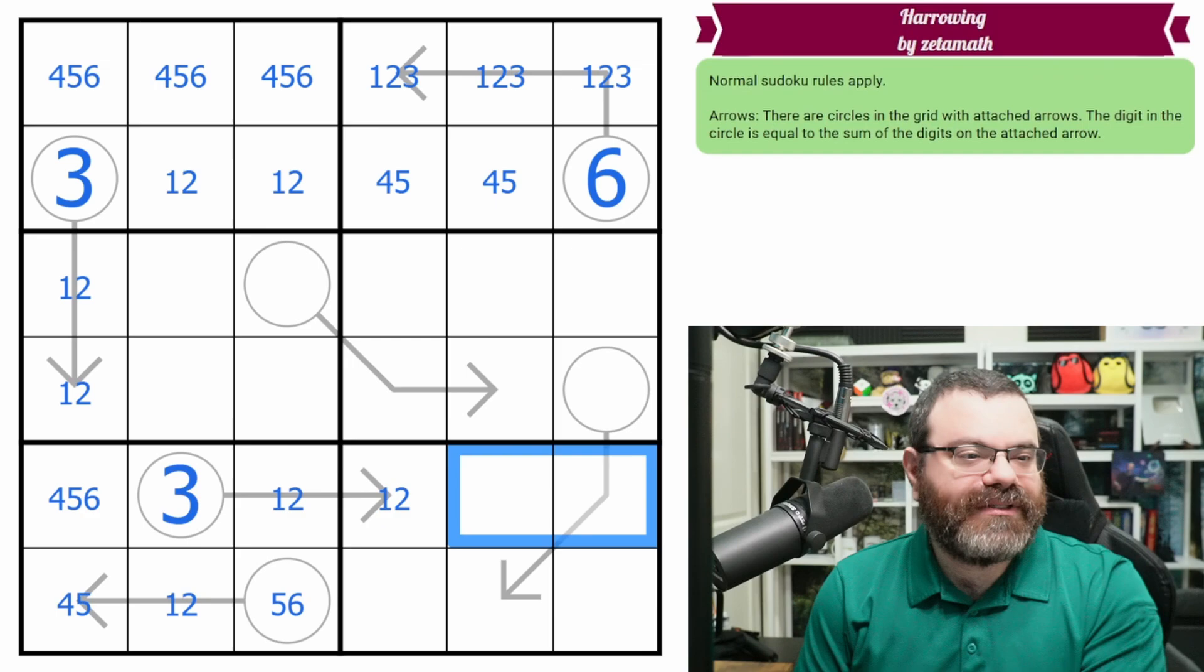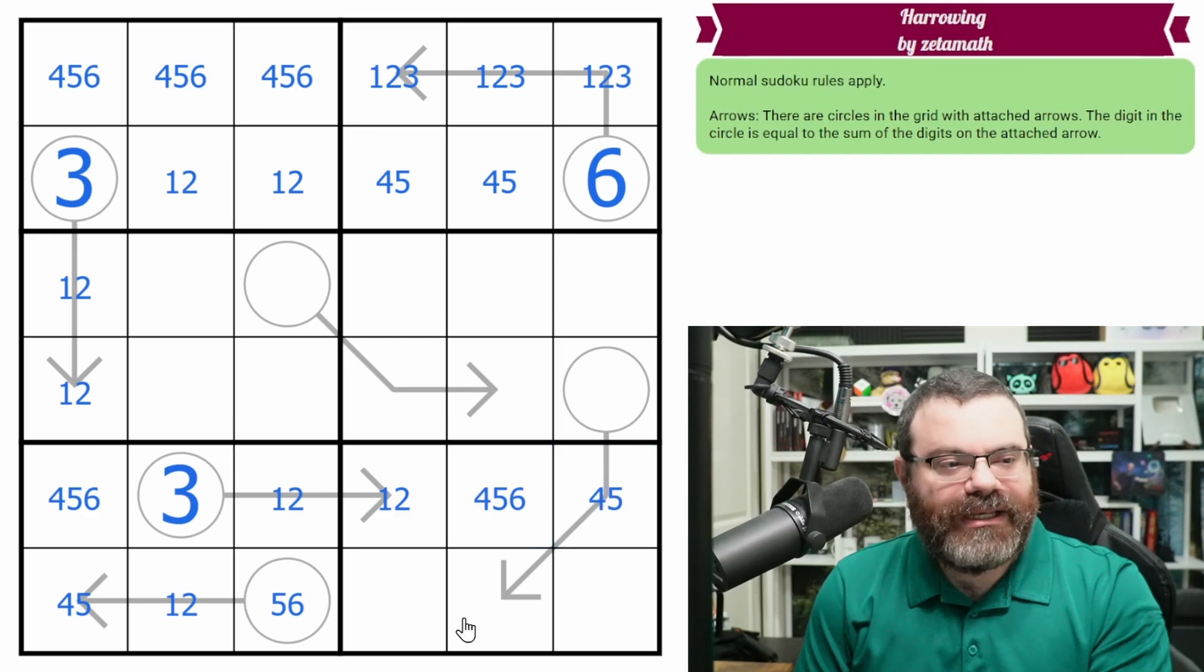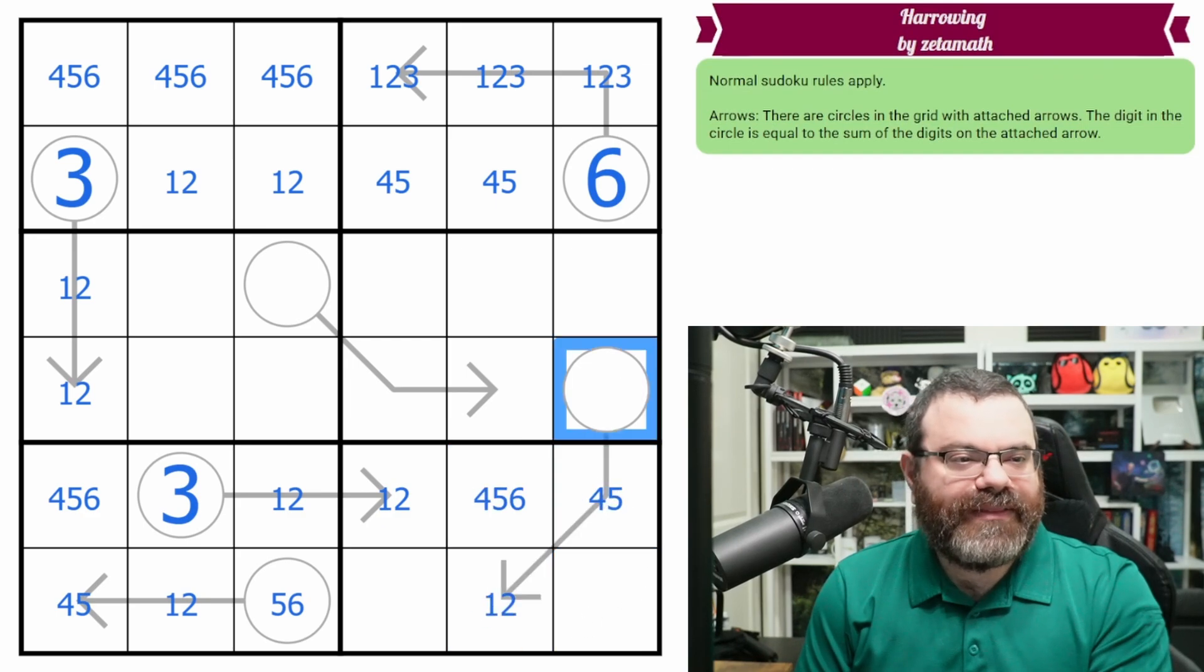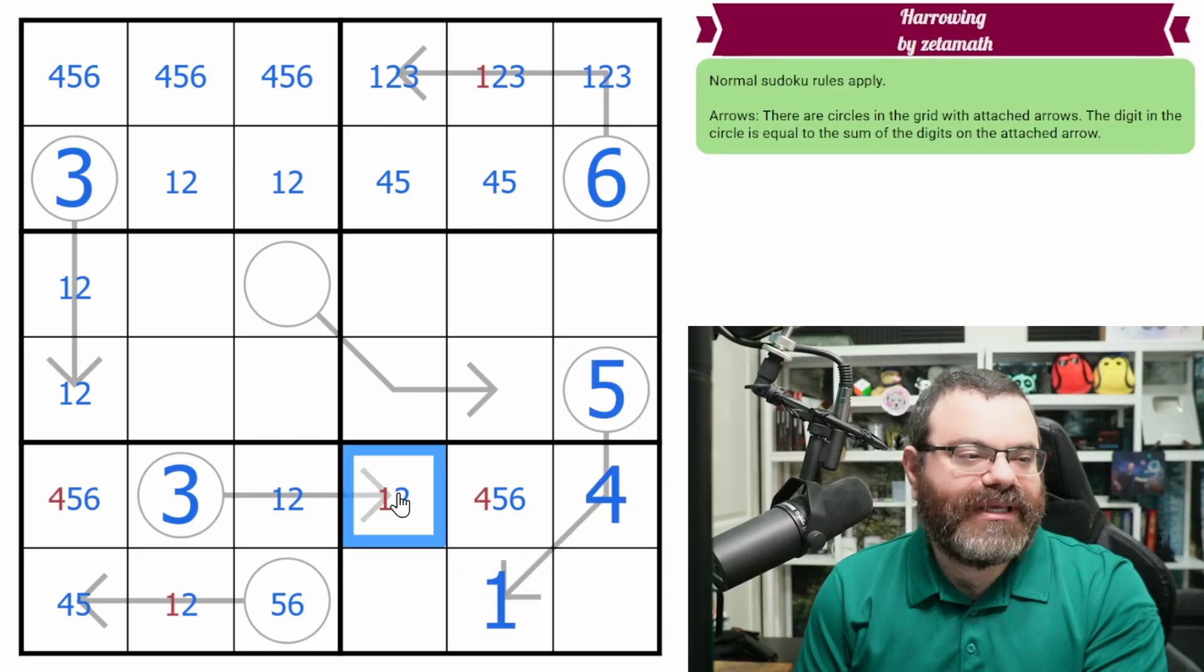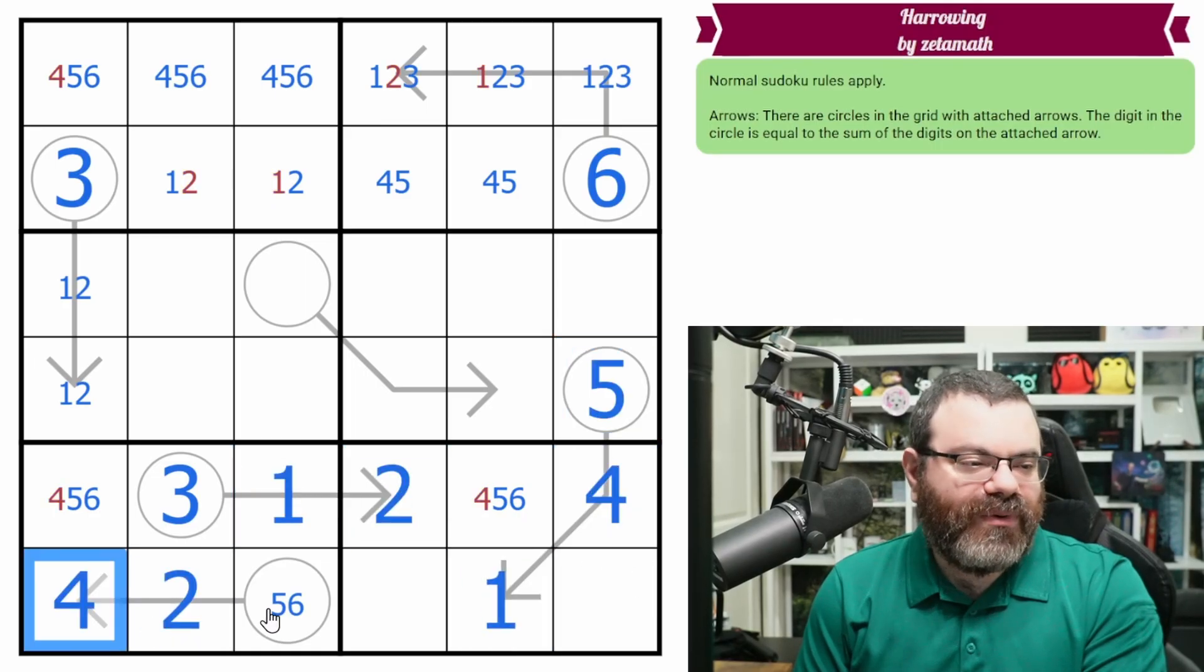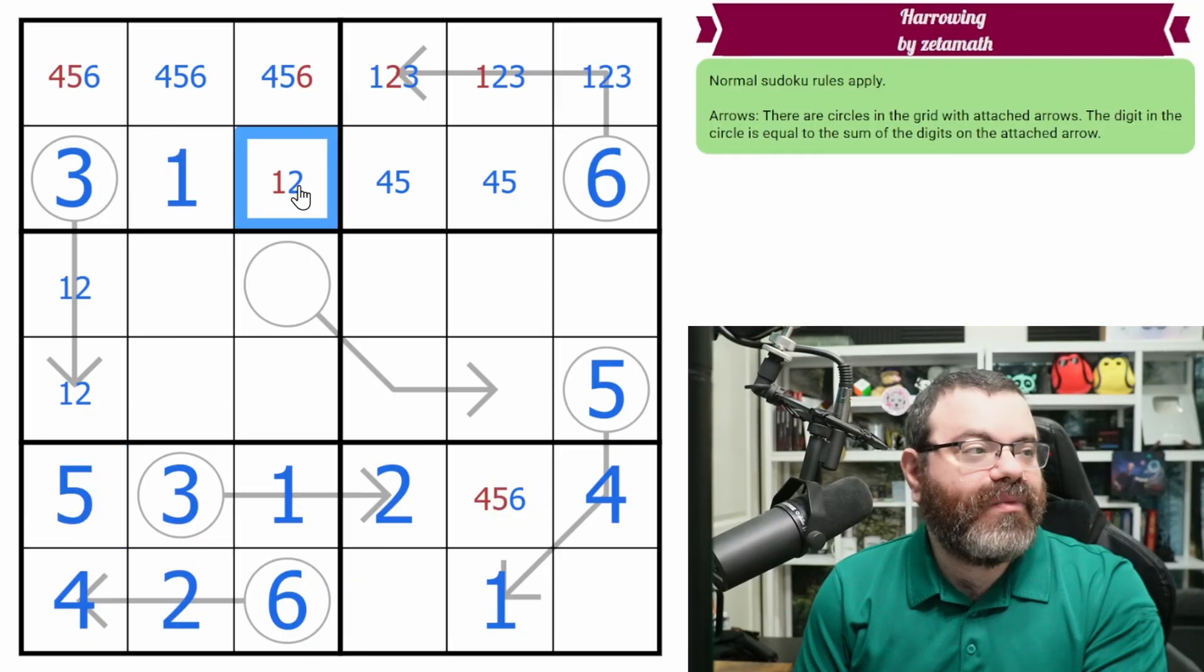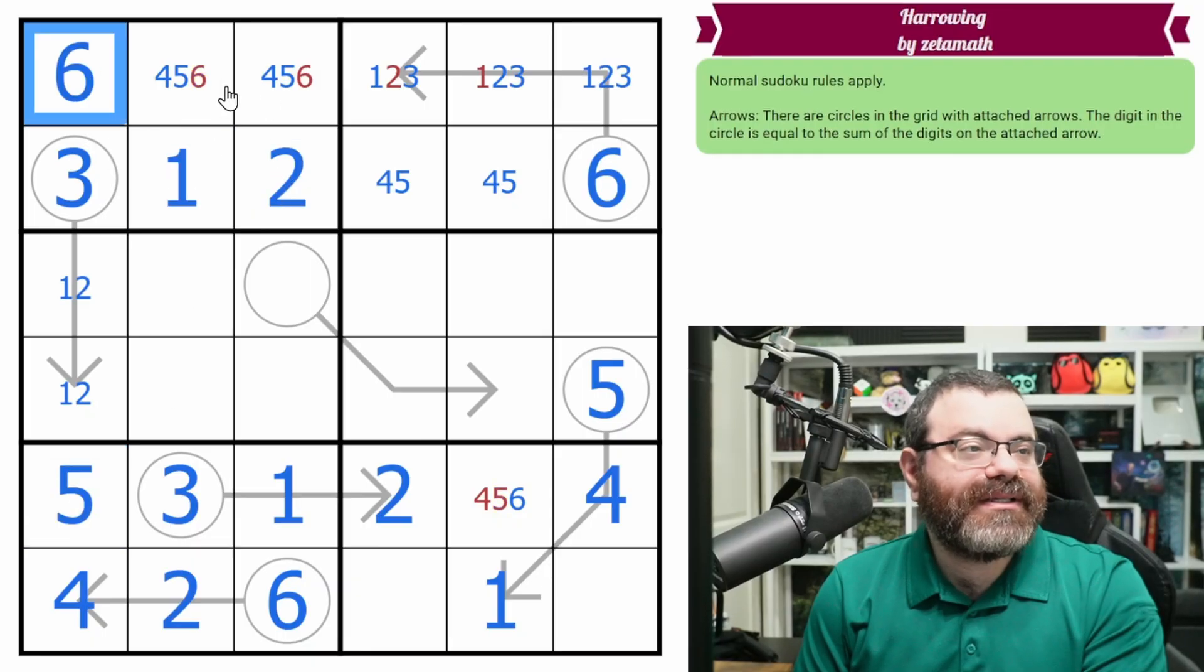And we need a 3 in the box, which goes here. So this has to be a 1, 2 pair as well. This is 4, 5, 6. That's not a 6. So this is also a 1, 2. And this adds to 5 or 6. But it can't add to 6. So that's the 5. Making that 4 and 1. Making that 2 and 1. Making that a 2. With a 4 adding to 6. That's 5. We get the 1, 2 here. We get the 6 here.